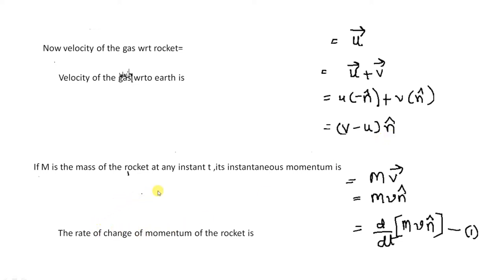Now, if M is the mass of the rocket at any instant, its instantaneous momentum is M·V·N̂ in vector notation. Therefore, the rate of change of momentum of the rocket is d/dt(M·V·N̂). Let us call this equation number one. As the rocket goes up, its velocity goes on increasing and momentum also goes on increasing, so we estimate the rate of change of momentum as d/dt(M·V·N̂).